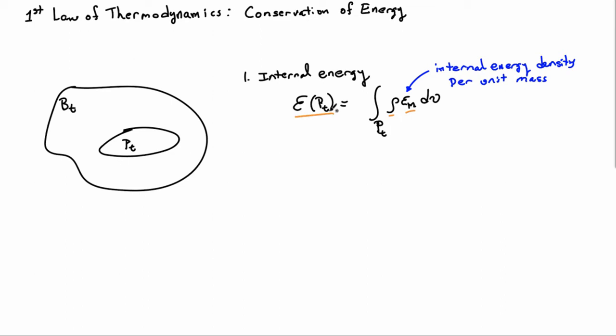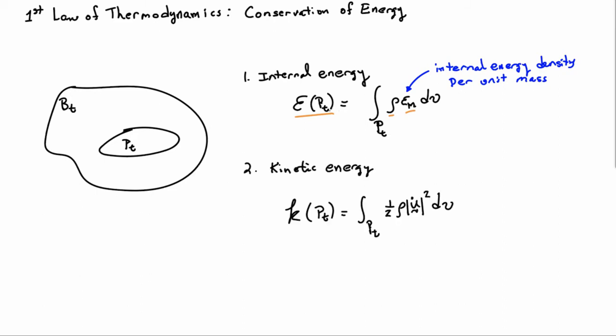The other way to store energy in Pt is via kinetic energy. The kinetic energy is a summation of one-half mv squared. We think of rho dV as the mass of a small element of material, multiply by one-half the square of the velocity — one-half the norm of u-dot squared — and integrate over the part to get the total kinetic energy.